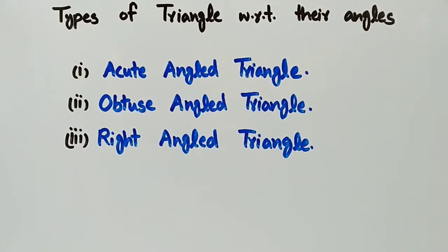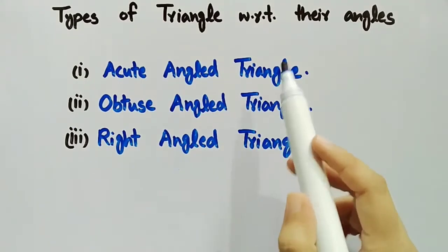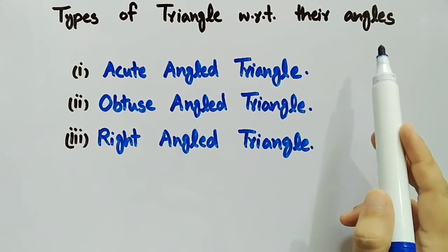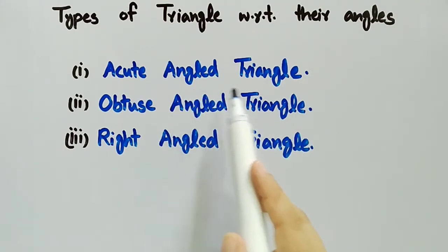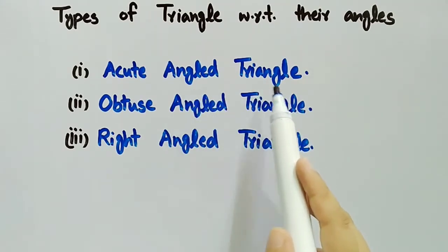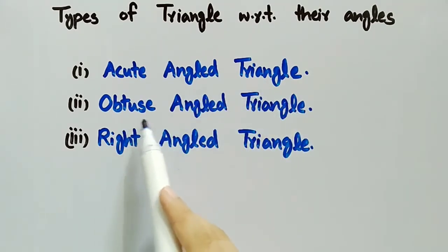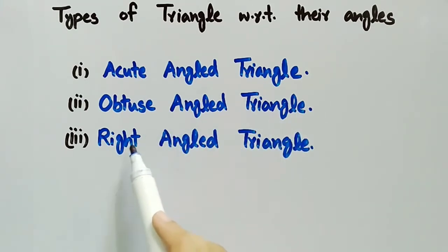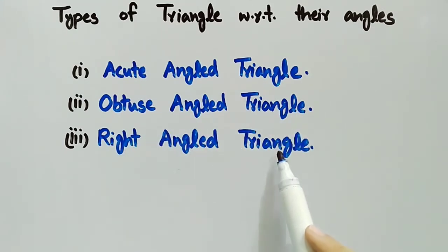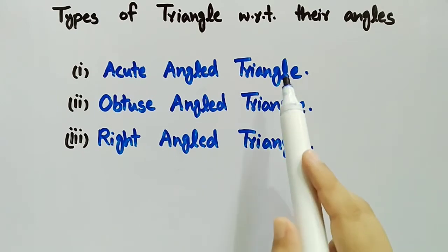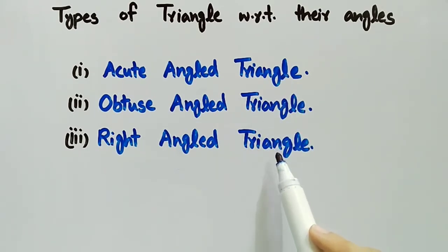In this video, we will discuss the types of triangle with respect to their angles, which are acute angle triangle, obtuse angle triangle, and right angle triangle. Now we will discuss all three types one by one.